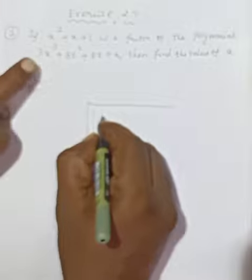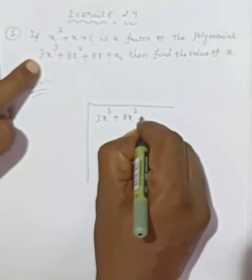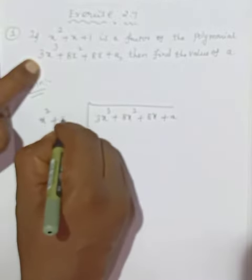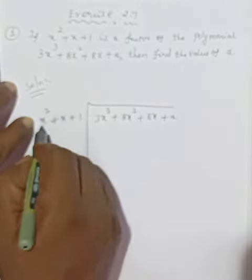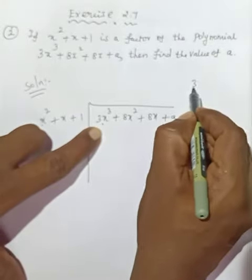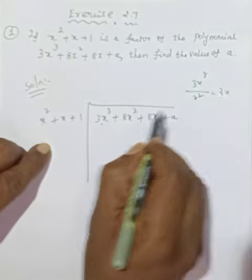Let me write the solution. What is given: 3x cube plus 8x squared plus 8x plus a, divided by x squared plus x plus 1. Which number do we multiply x squared by? Very simple: 3x cube divided by x squared equals 3x.